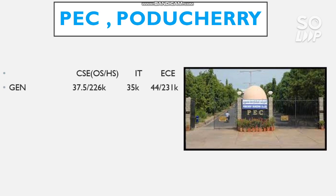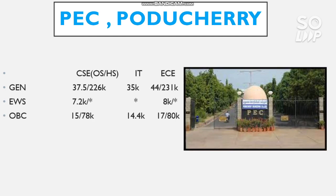The next is Puducherry, which is also a GFDI. Home state and other state cutoffs are available for CS and EC. For General other state, it is 37,500 for CS. The home state cutoff is very high at around 2.26 lakh - if you are from home state you can get in around 77-80 percentile. For IT it is 35,000 and EC 44,000. For EWS: CS 7,200 and EC 8,000. Wherever you see a star mark, that category is not reserved in that particular branch. For OBC: 14,400 and 17,000. For SC: 7,600 and 10,000. For ST: 4,100 and 5,300.